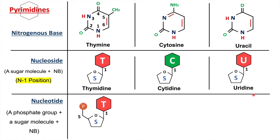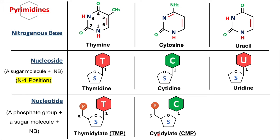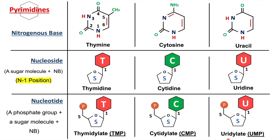When the sugar molecule is attached to uracil it becomes uridine. When the phosphate group is then attached to the nucleoside it becomes a nucleotide: thymidine becomes thymidylate, also called thymidine 5'-monophosphate (TMP); cytidine becomes cytidine 5'-monophosphate (CMP); and uridine becomes uridylate, also called uridine 5'-monophosphate (UMP).